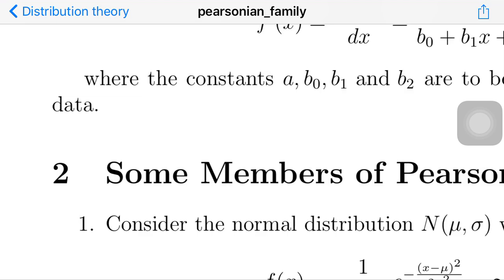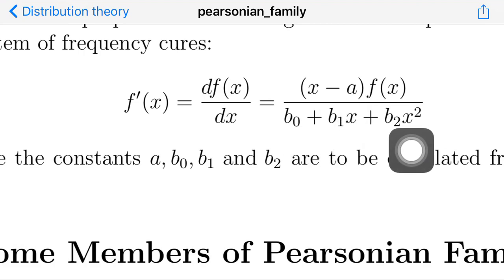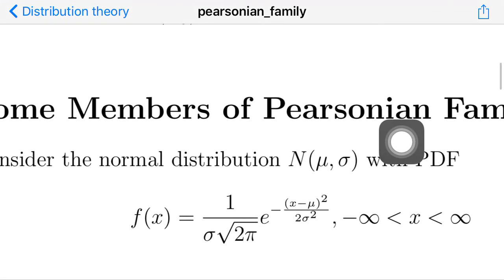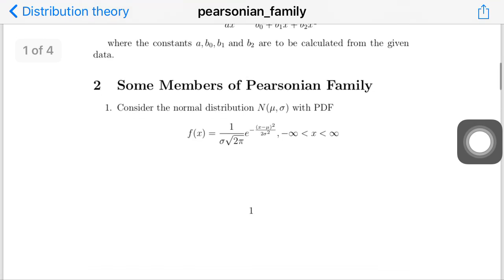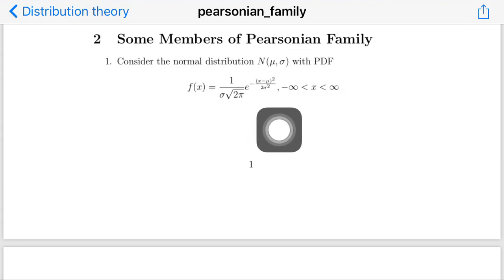Before discussing how the constants a, b₀, b₁, and b₂ are computed, we will check for some distributions whether they belong to the Pearsonian family. I have added two examples here, and you can try with many standard distributions to check whether they belong to the Pearsonian family.